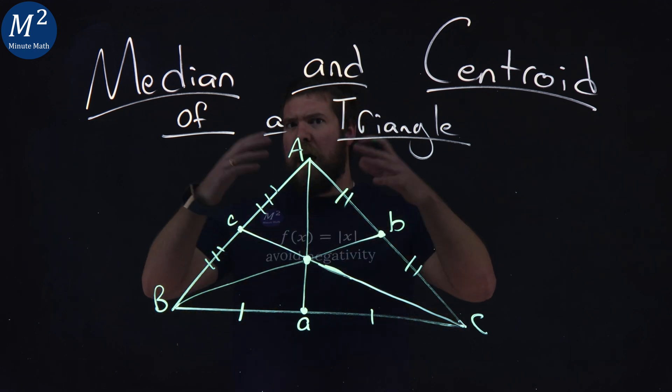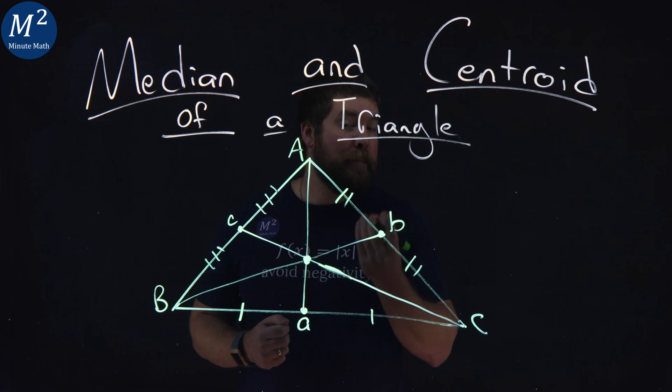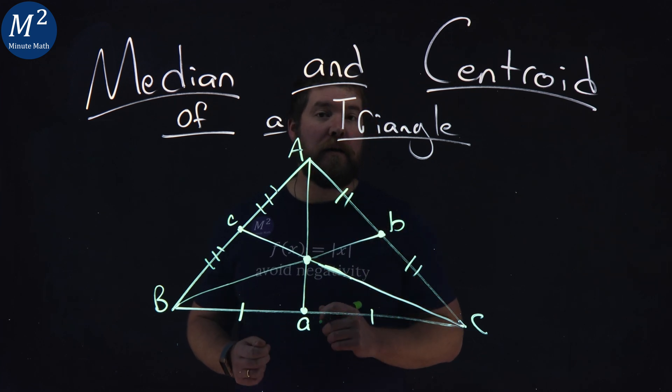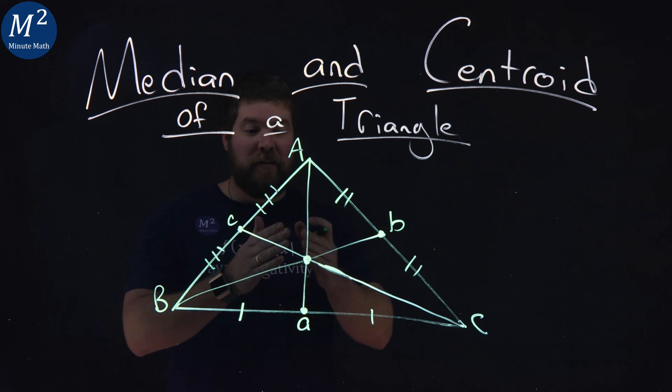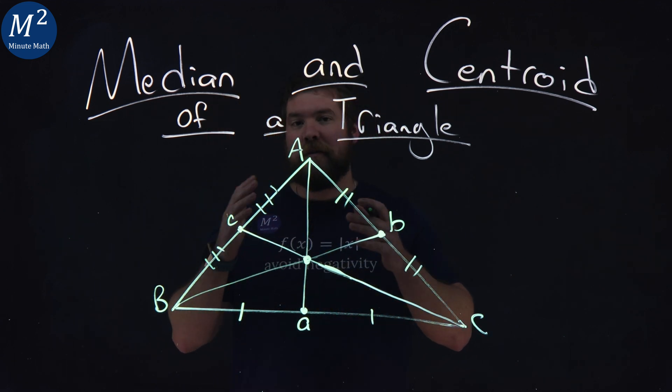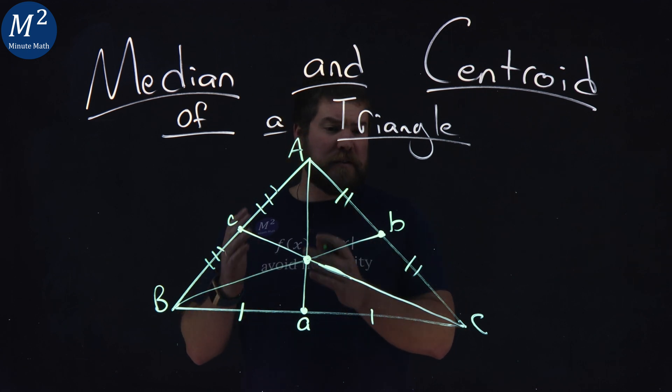It's actually the balancing point as well. If this was an object that you could hold, you want to find the exact middle that balances the median, or the centroid, excuse me, of the triangle is what you want to find. And that's what we have right here. The exact middle of a triangle. Pretty cool stuff here.